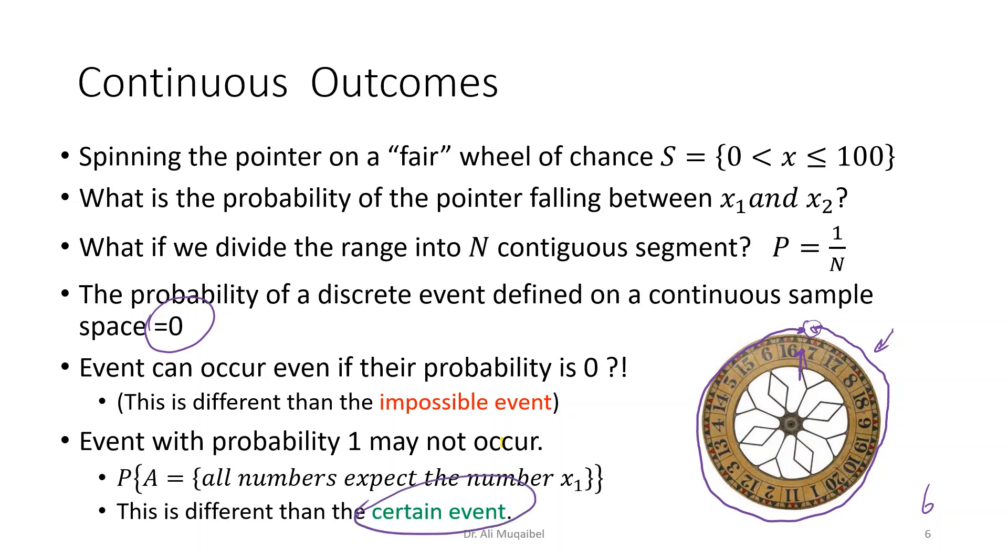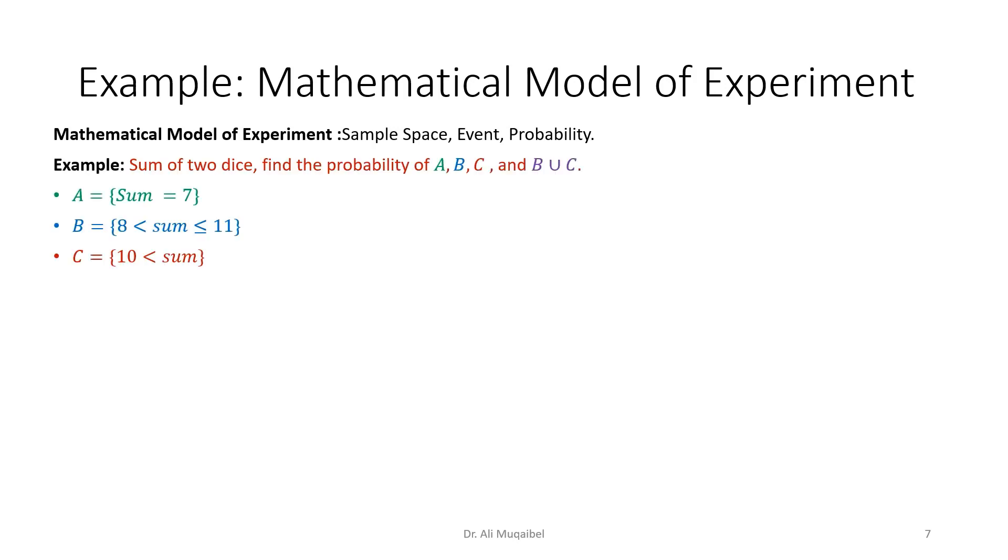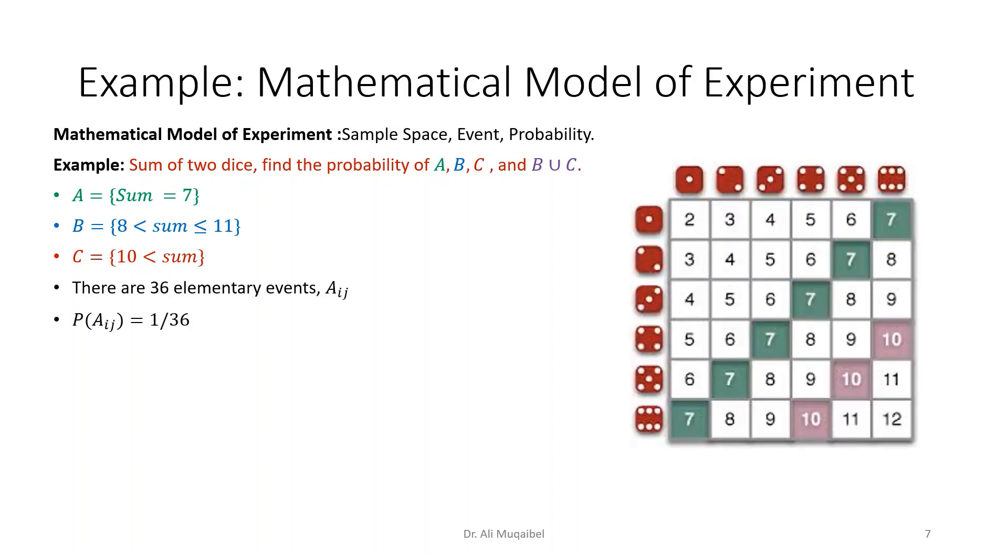Mathematical models of experiments. Okay, we have sample space, event, and probability. Let's do this example together. I'm using colors here to simplify things. We have an event of rolling a die and we are looking at the probability of having sum equal to seven.